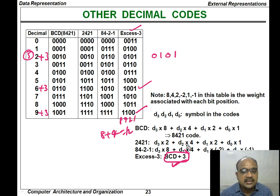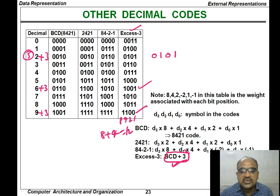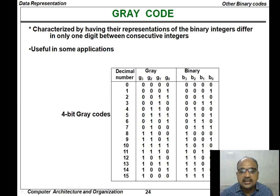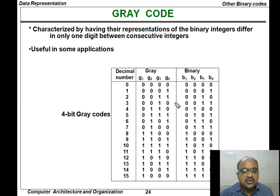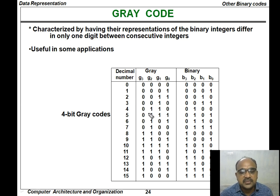In addition to these codes, another important code computers generally use is the Gray code. It is somewhat tricky compared to the other codes. In the case of Gray code, you may observe that the change between any two consecutive codes will be only 1 bit change.